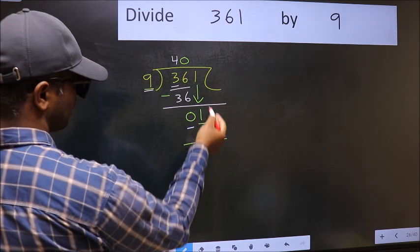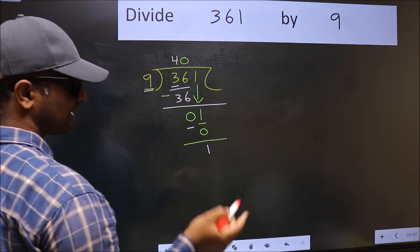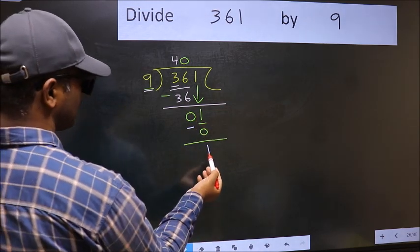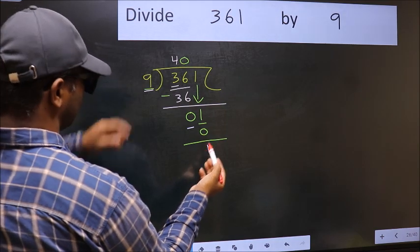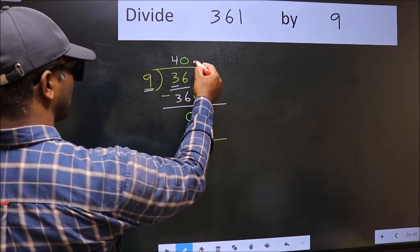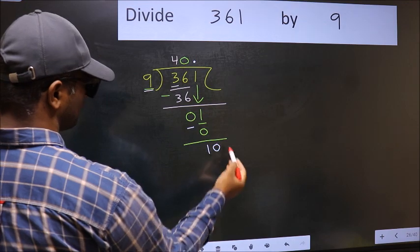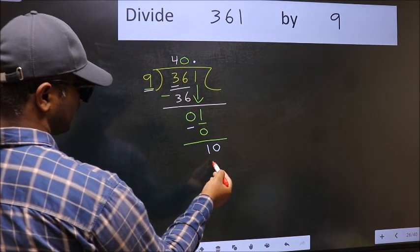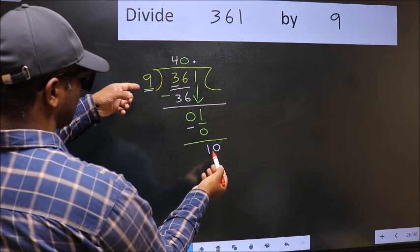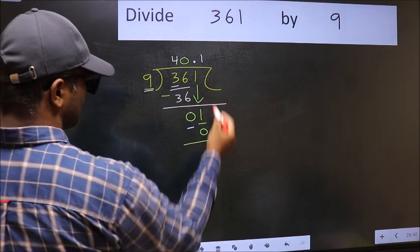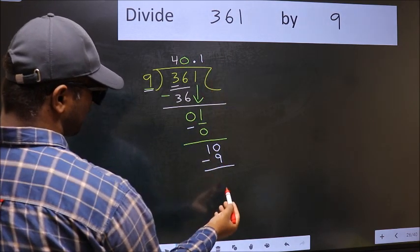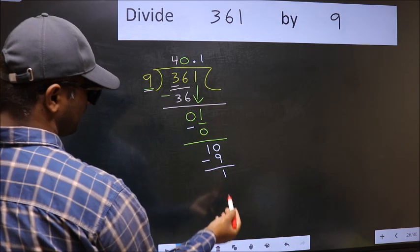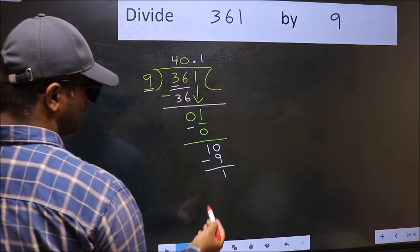Over here, we did not bring any number down. 1 is smaller than 9. So now you can put dot and take 0. So 10. A number close to 10 in 9 table is 9 once 9. Now you should subtract. We get 1. We got 1 again.